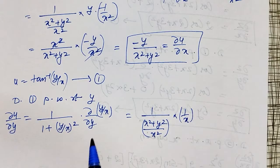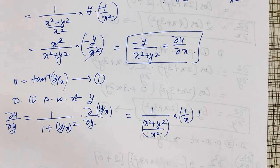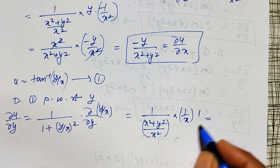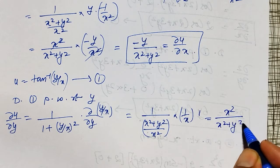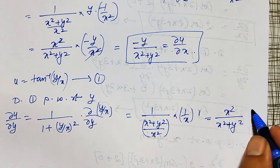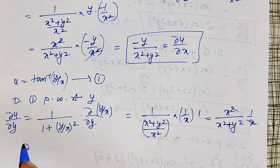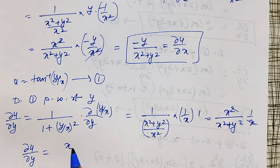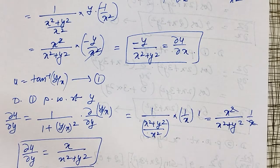Simplifying, the x²/(x² + y²) multiplied by 1/x gives one x cancelling, so ∂u/∂y = x/(x² + y²). This is equation number three.